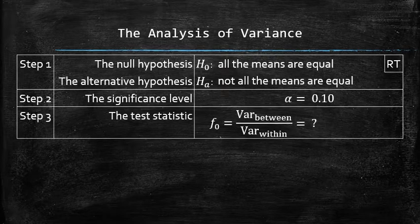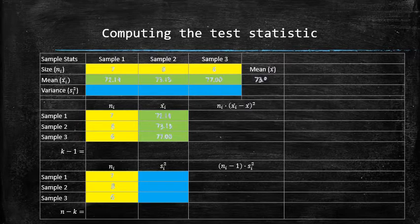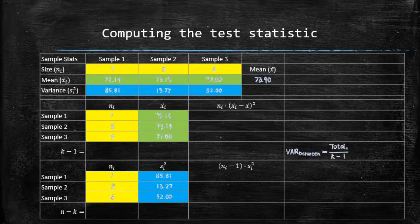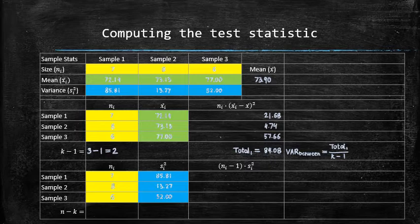The test statistic can be computed by finding the ratio of the variation between the samples and the variation within the samples. To compute the test statistic, we are going to use the template. First enter the sample sizes in yellow, then enter the sample means in green, and the mean of three samples combined in the provided cell. Then enter the sample variances in blue. The variation between the samples will be computed using the following formula. To find the total, we multiply the sample size by the square of the difference between the sample mean and the mean of all samples, and add them together. To find the denominator, we subtract one from the number of samples k to get two. So the variation between the samples is equal to 84.08 divided by two, which is 42.04.